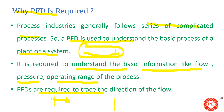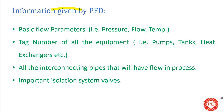The basic information we get from a PFD is pressure, flow, and temperature. For pressure, we get operating pressure and design pressure. For flow, many designers mark average flow, maximum flow, and intermittent flow. For temperature, they mark maximum temperature, minimum temperature, and intermittent temperature. This is the basic information you will get from each and every PFD. If more information is present in any PFD, that varies from designer to designer, process to process, or according to the customer's requirements.